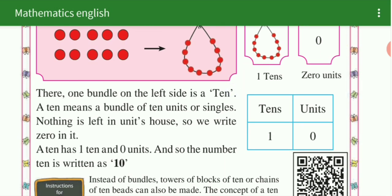See here, there, 1 bundle on the left side is a ten. A ten means a bundle of 10 units. Nothing is left in units house, so we write 0 in it. When 10 units are tied together, they become tens, 1 ten. Units how many? 0.